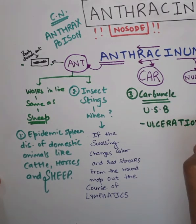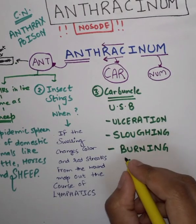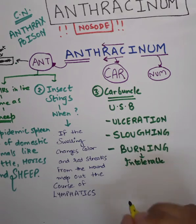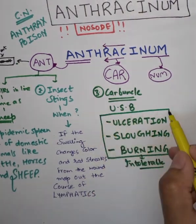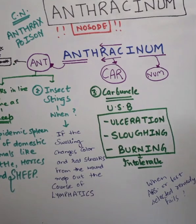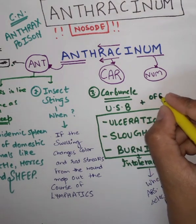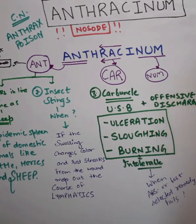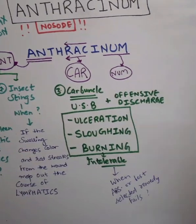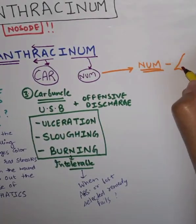CAR stands for carbuncle. USB means ulceration, sloughing, and burning — intolerable burning so intense that even if arsenic fails, you will give Anthracenum. When the best selected remedy fails, we give Anthracenum. There are also offensive discharges. So under CAR-BUNCLE we have ulceration, sloughing, burning, and offensive discharges.